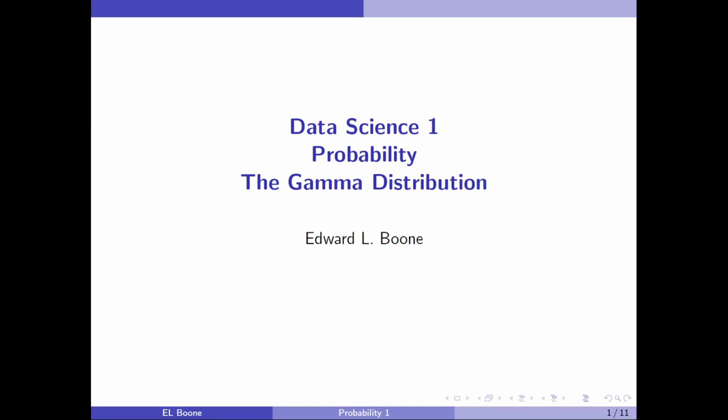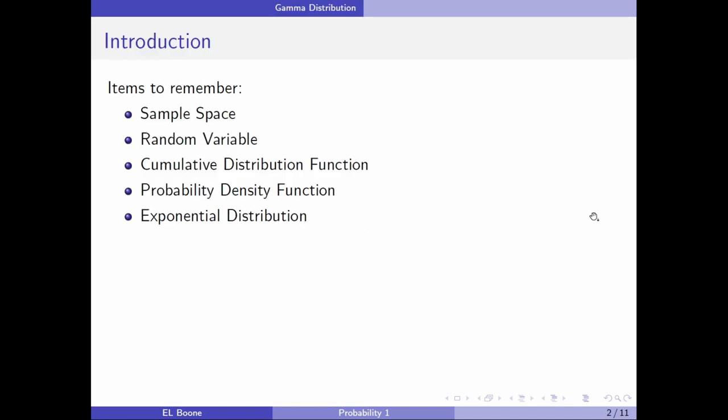Welcome to Data Science 1, probability, the gamma distribution. Some things we need to remember: the sample space, random variable, cumulative distribution function, probability density function, and the exponential distribution.